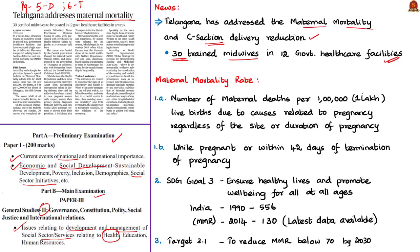In this context, you need to know what is meant by maternal mortality rate. As per the World Health Organization, maternal mortality rate refers to the number of maternal deaths per 1 lakh live births due to cases related to pregnancy — that is, death while pregnant or within 42 days of termination of pregnancy, regardless of the site or duration of pregnancy, where site refers to the location of the pregnant woman.